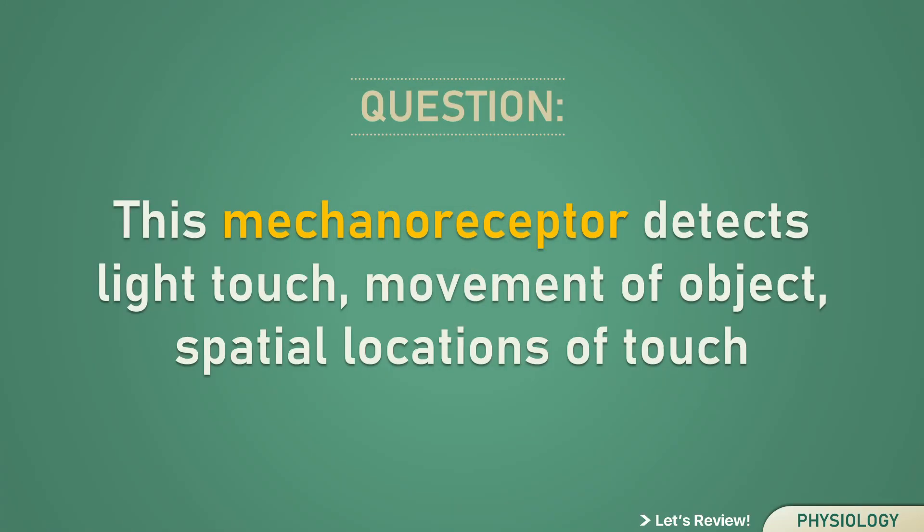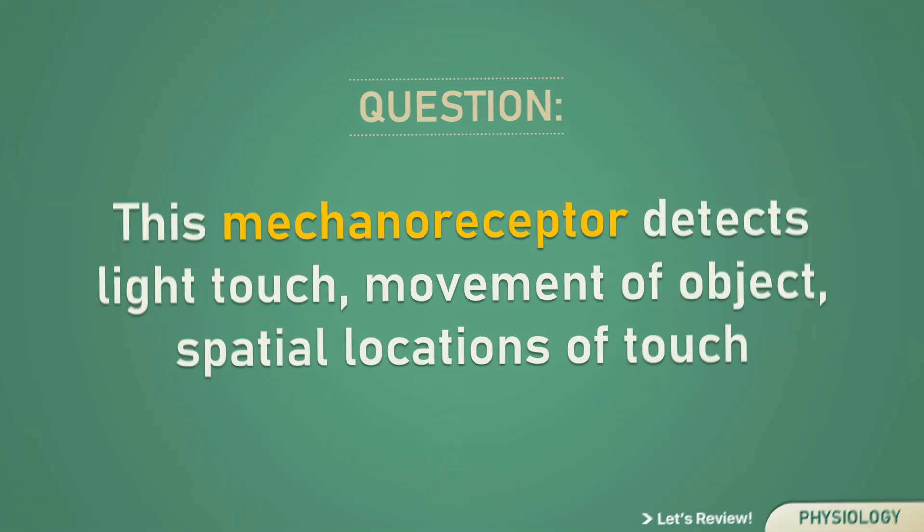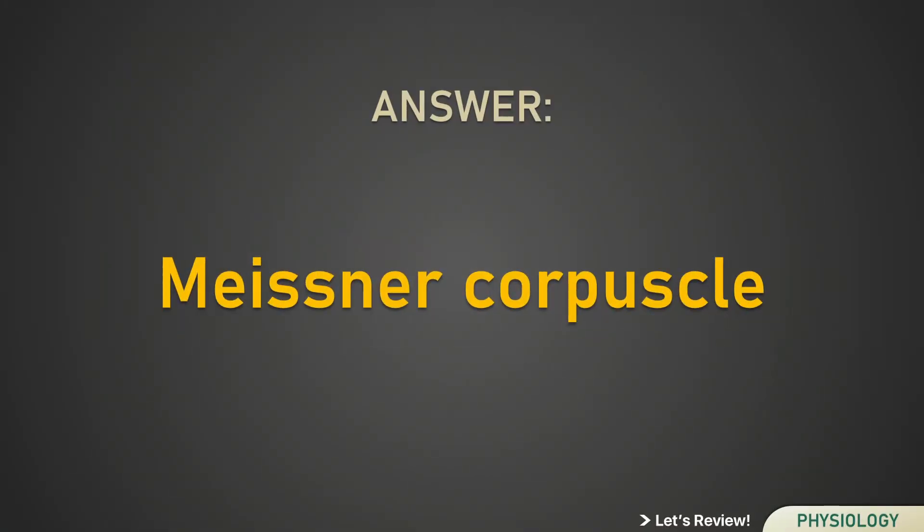This mechanoreceptor detects light touch, movement of object, and spatial locations of touch. Meissner corpuscle.